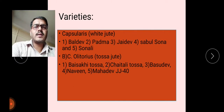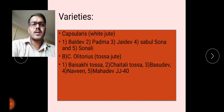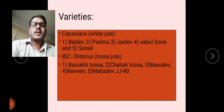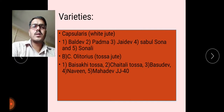Coming to important varieties: Corcorus Capsularis is called white jute, and Corcorus Olitorius is called tosa jute — these are the two cultivated species. Selected varieties of white jute include Baldev, Padma, Jadev, Sabal, Sona, and Sonale. Tosa jute also has several selected varieties developed for cultivation.